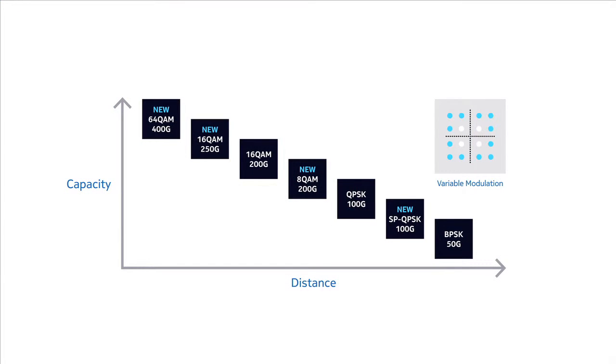The photonic service engine 2 is capable of different modulation formats. That gives you the choice of extended reach on one hand, extreme capacity on the other hand, and granularity in between to meet your specific network requirements.